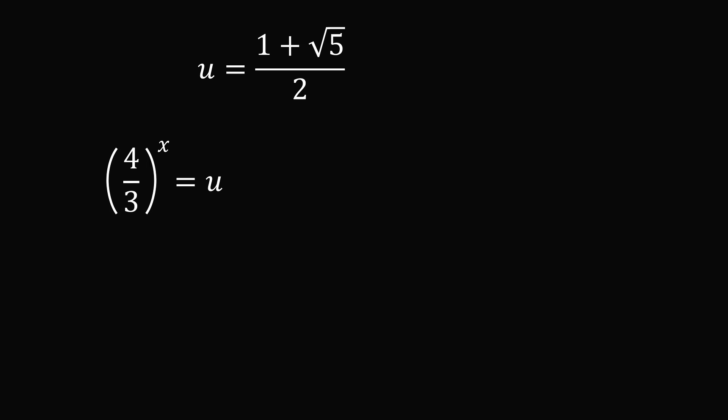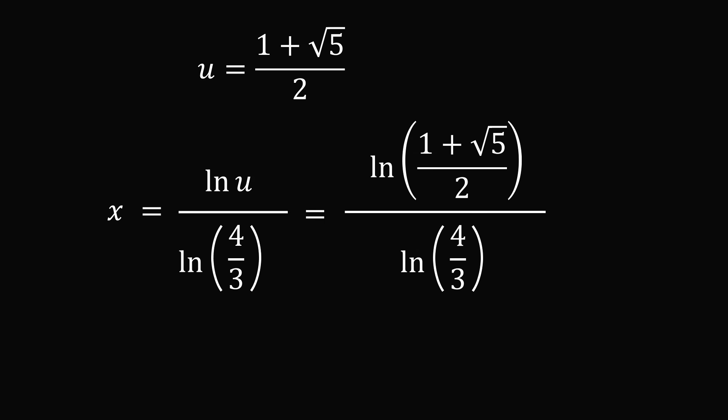It remains to solve for x. Let's take the natural log of both sides. We can then bring this exponent x out to the front. Divide both sides by ln(4/3). Finally, substitute in for u. Therefore, x = ln((1 + √5) / 2) / ln(4/3). This is approximately equal to 1.673.